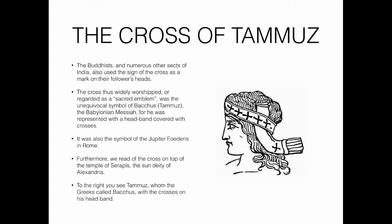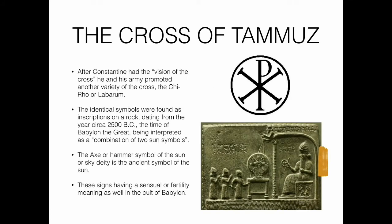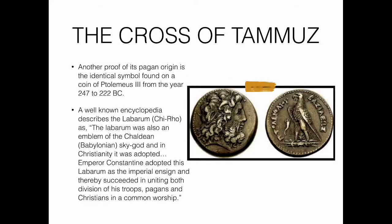After Constantine's vision of the cross, he and his army promoted another variety of the cross: the Chi-Rho or labarum. Identical symbols were found as inscriptions on a rock dating from circa 2500 BC — the time of Babylon the Great — being interpreted as a combination of two sun symbols. The axe or hammer symbol of the sun or sky deity is the ancient symbol of the sun, these signs having a sensual or fertility meaning in the cult of Babylon. On the top you see the labarum or Chi-Rho symbol.